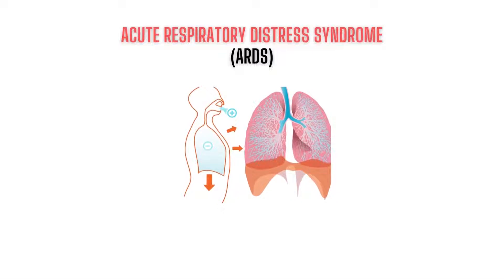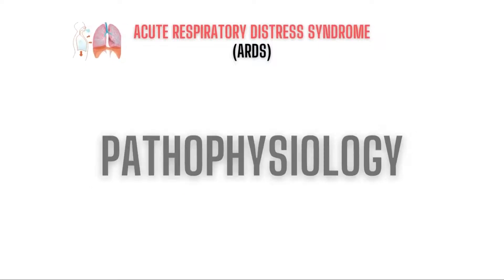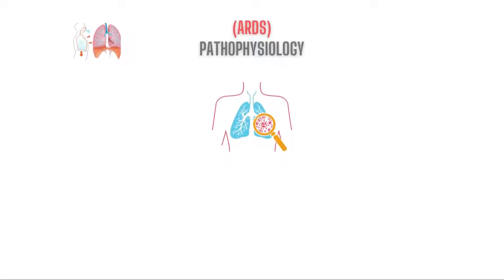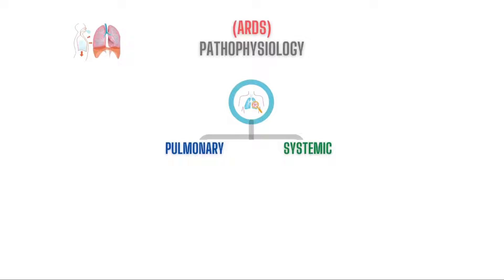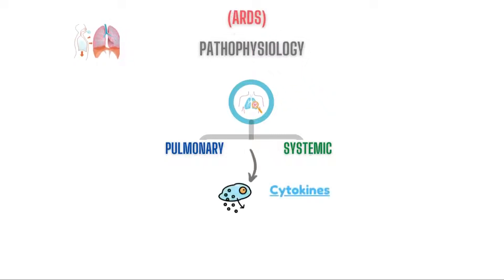So what exactly happens in ARDS — what is its pathophysiology? Pay close attention: any kind of lung injury, either direct or indirect, causes lung inflammation. The inflammation is of two types: either pulmonary or systemic inflammation. This is what happens in acute respiratory distress syndrome — there is pulmonary or systemic inflammation.